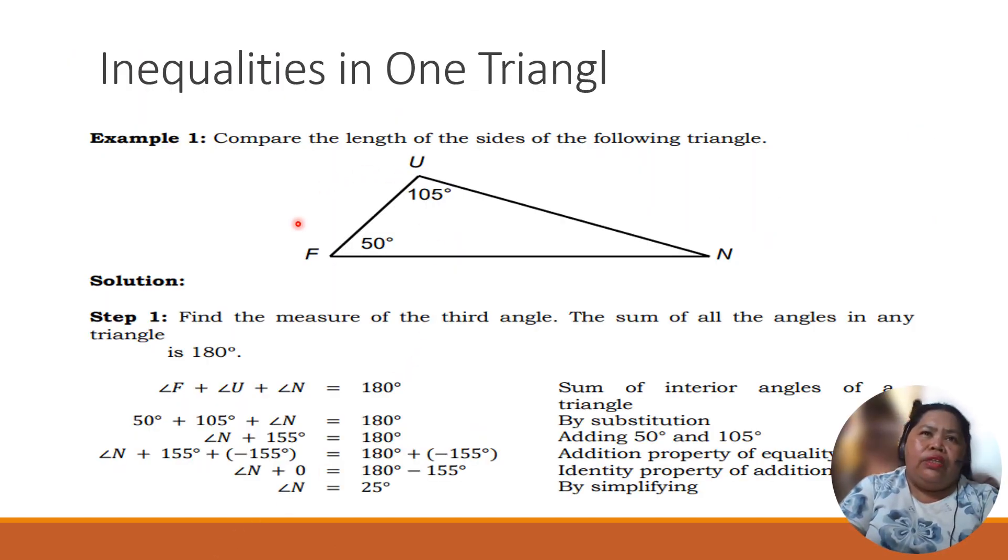Now, in inequalities in one triangle. Compare the length of the sides of the following triangle. So here we have sides. We have the obtuse angle and an acute angle. Find the measure of the third angle, the sum of all the angles. The total of this is 180. So this is what we are looking for.